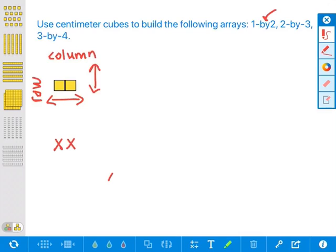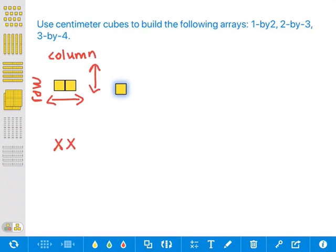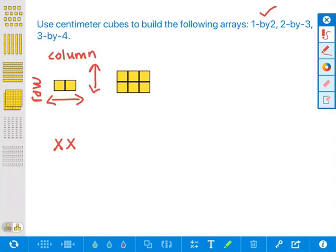All right, two by three. So I'm going to have two rows and three columns. So that's showing two by three. And if you did this as an array with x's, you would do three across, and your row you would have two x's to show two by three.